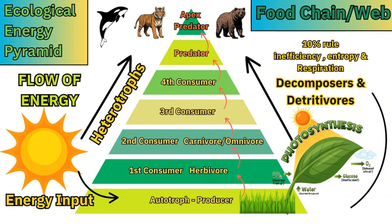The apex predator is the animal or species within a certain ecosystem that is not being eaten — it is not prey. It only acts as the predator. It's the single, or in some cases multiple, animals at the top of the food chain that are not hunted. Examples include a grizzly bear, a tiger, and an orca — a killer whale — in a marine environment.